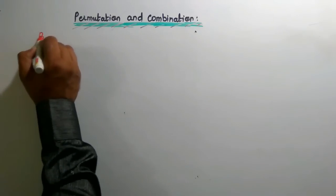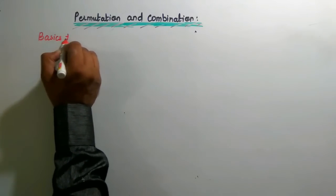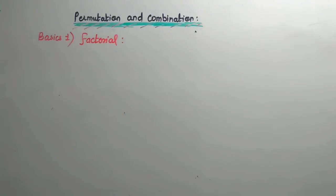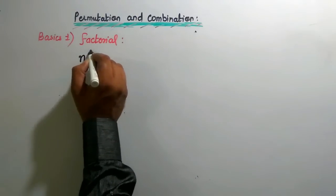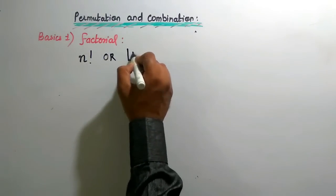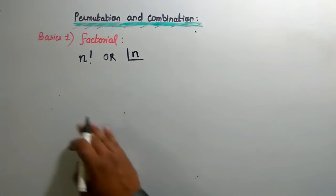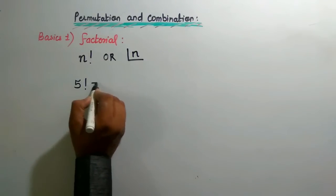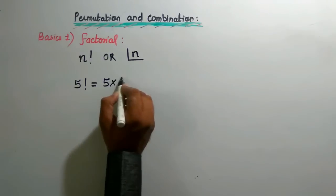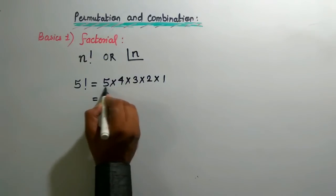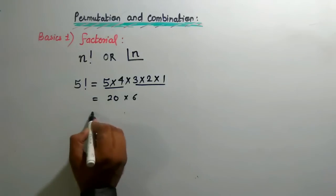Basics number one: Factorial. What is actually a factorial? You can write it using an exclamation mark — it is called factorial. These are the two most common representations. So what is a factorial? For example, 5 factorial means 5 × 4 × 3 × 2 × 1. Five into four is 20, three into two into one is 6, and the product is 120.